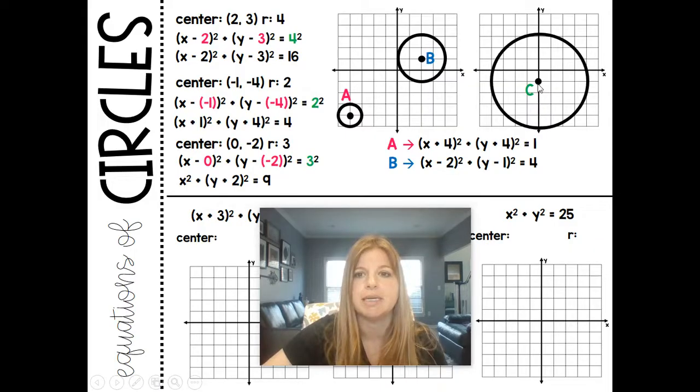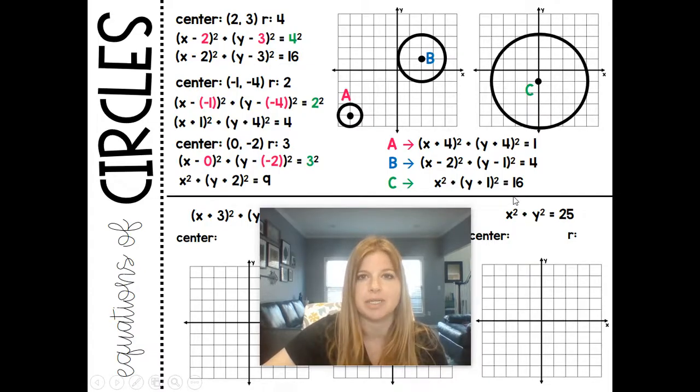The last one here for C. I have my center at 0, negative 1. So if I look at circle C and I have to do x minus 0, it's just x squared. A negative 1 value, so y minus negative 1 would mean it's y plus 1. And then my radius is 4, and 4 squared is 16.